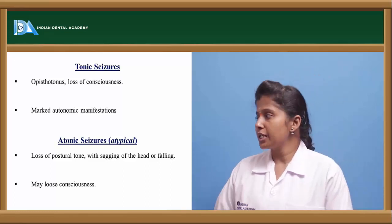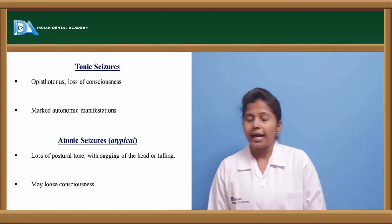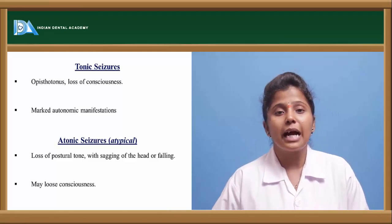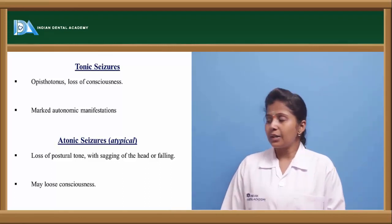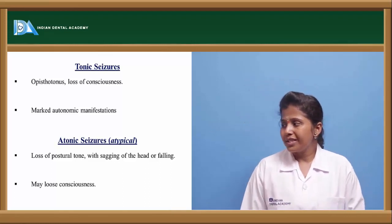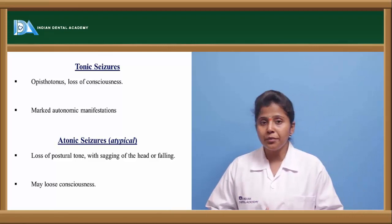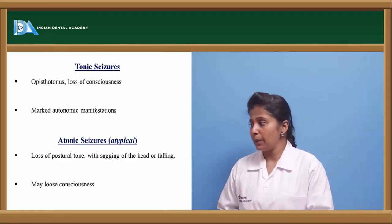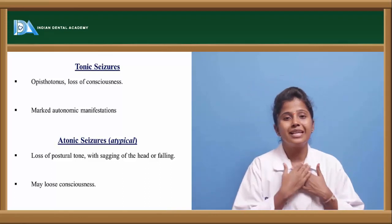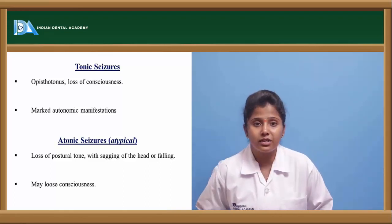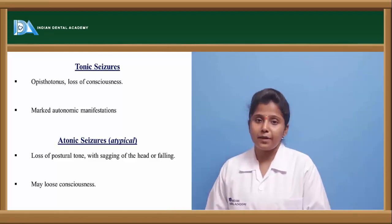Tonic seizures usually cause loss of consciousness and are caused by disturbances in the autonomic nervous system. Atonic seizures (atypical seizures) cause loss of posterior tone — the movements of the posterior region are altered. There will be sagging of the head or falling; the person's head movement is impaired due to affected muscles and nerves in the neck region. The person may sometimes lose consciousness.